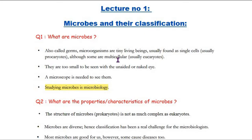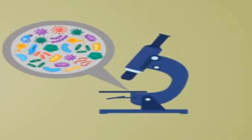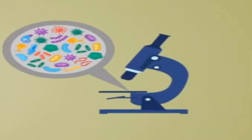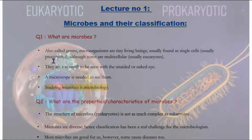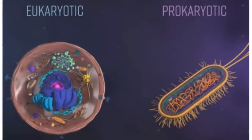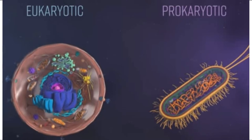The first question is: what are microbes? Microorganisms are very tiny living beings, which you also know as germs. Some microbes are prokaryotes and some are eukaryotes. Microorganisms are single cells.